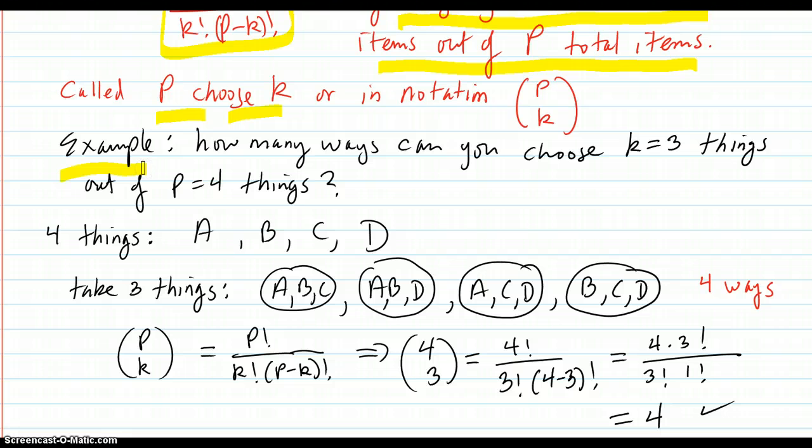The number of ways you can choose k items out of p total items. Here's an example. How many ways can you choose 3 things out of 4 things? So here's your 4 things. A, B, C, D. You can take 3 things this way. You can take A, B, C. You can take A, B, D. You can take A, C, D. And B, C, D. That's the 4 total ways that you can select 3 things out of 4.